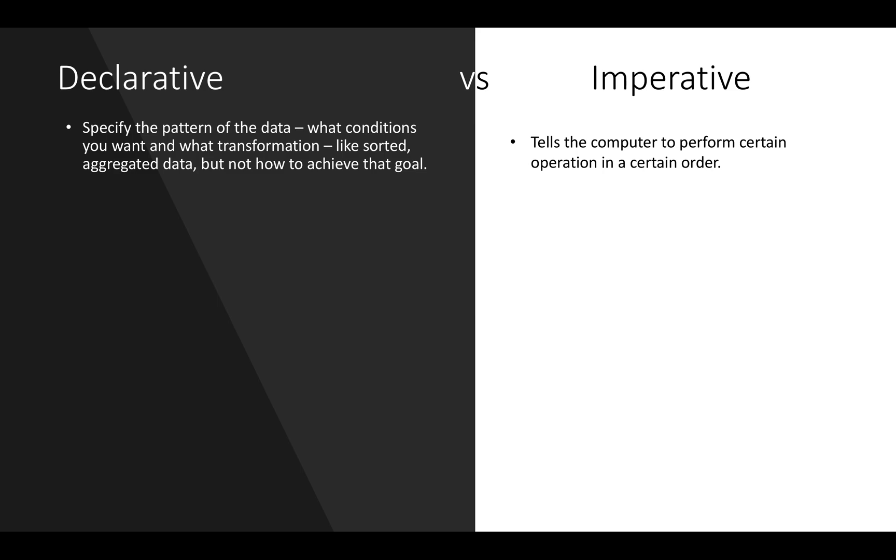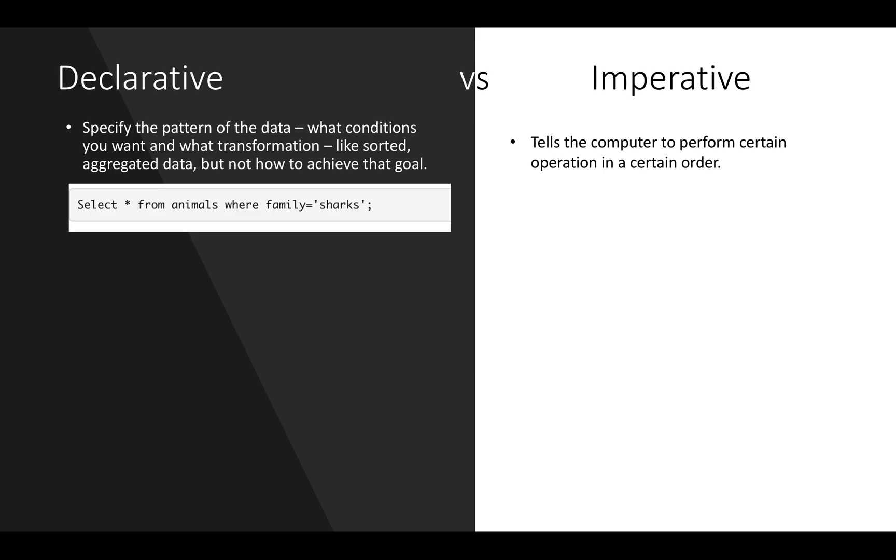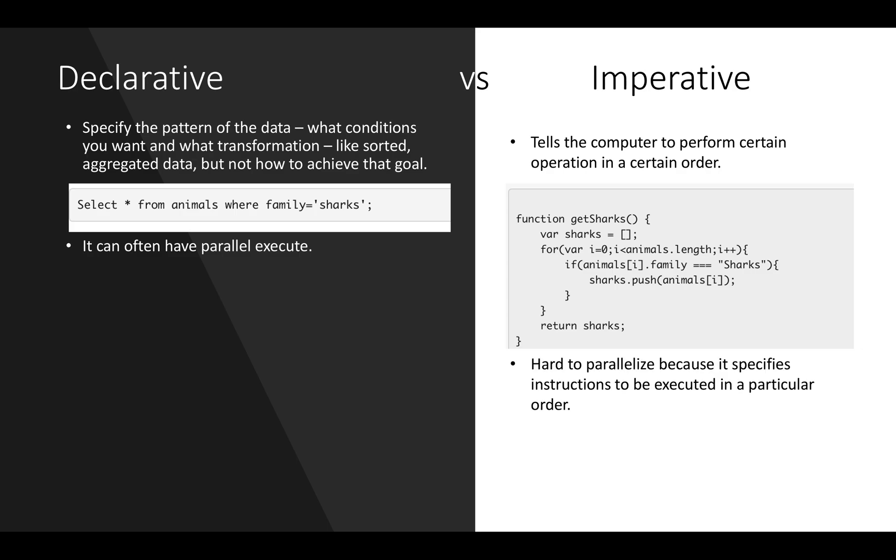Whereas in imperative, we tell the computer to perform certain operations in a certain order. If we see the example, SQL is a declarative language. So if we have a set of animals and we have to find out all the sharks family, we'll just specify a query, select star from animals where family equal to sharks. But in case of imperative, we'll specify more of the code and we'll specify the instructions how to find out the sharks family. So declarative languages can parallely execute. Whereas it is difficult to parallelly execute in imperative because it specifies the instructions to be executed in a particular order.